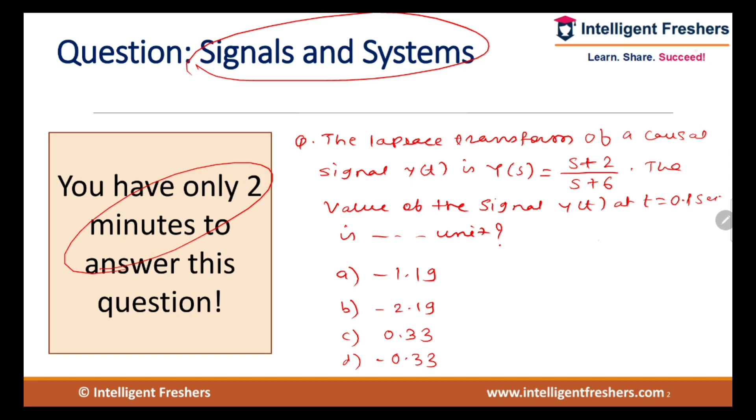The question is: the Laplace transform of causal signal y(t) is Y(s) = (s+2)/(s+6). The value of the signal y(t) at t equals 0.1 second is given in units. Four options are given, one of the options is correct.